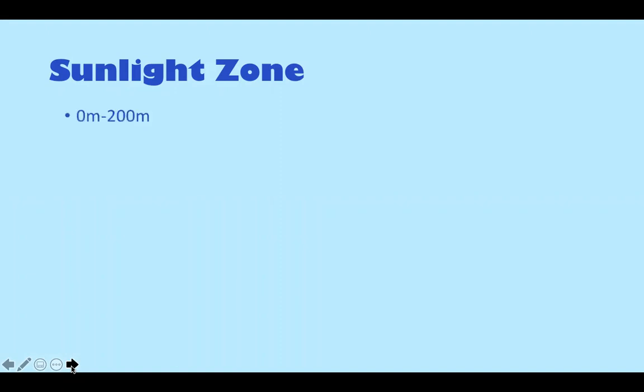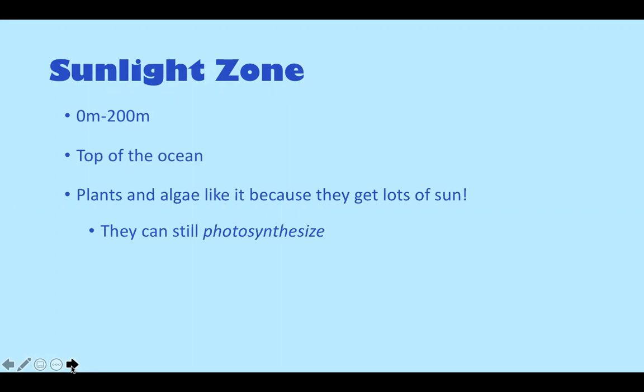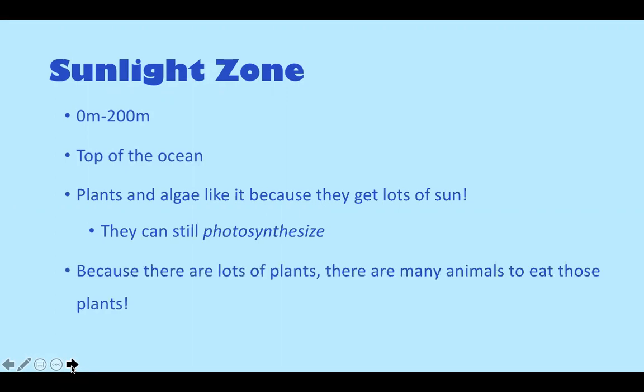The sunlight zone goes from zero to 200 meters, and it is basically the top of the ocean. Plants and algae like it because they get lots of sun so they can photosynthesize. Photosynthesis is when plants make energy from the sun's light. Because there are a lot of plants, there are many animals to eat those plants. The sunlight zone has the most animals out of anywhere in the ocean, so it is the most biodiverse.